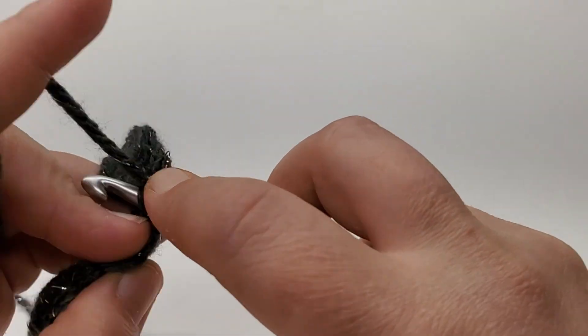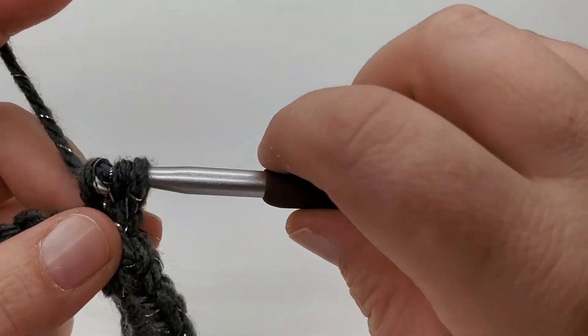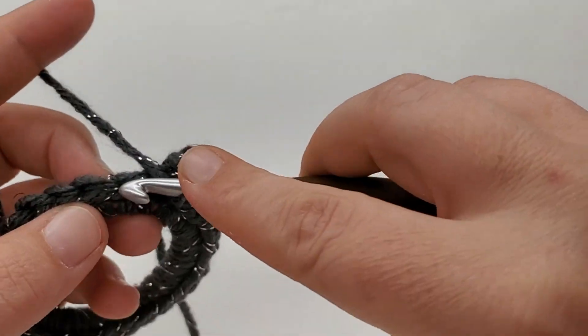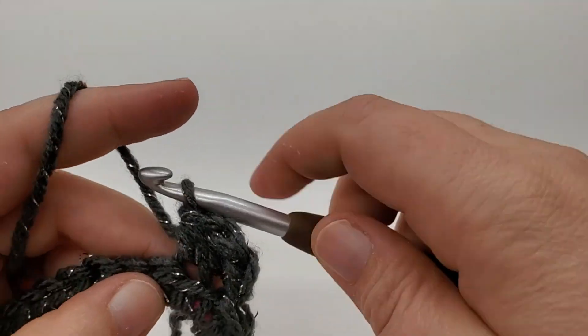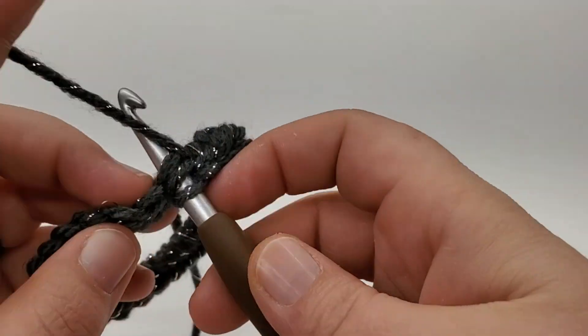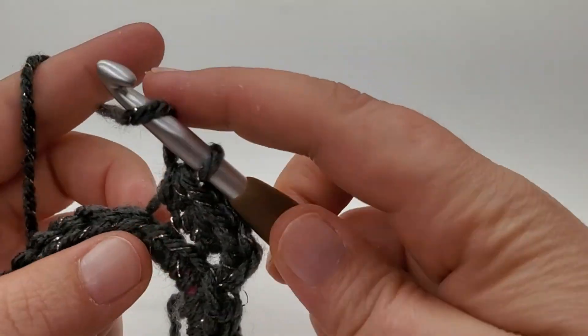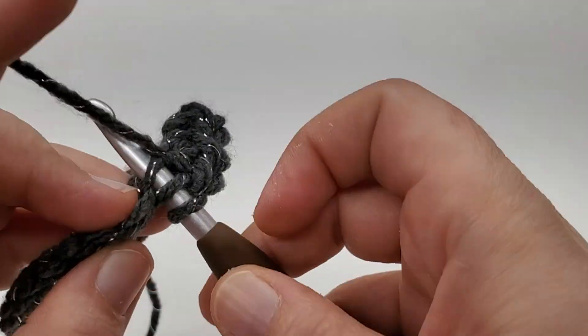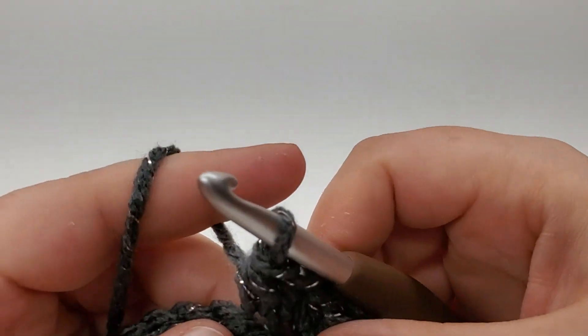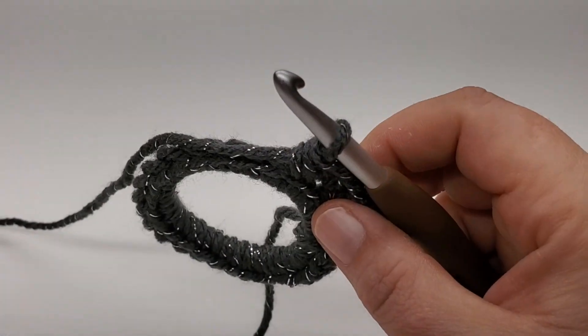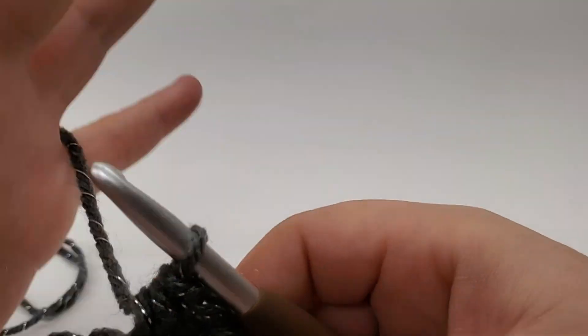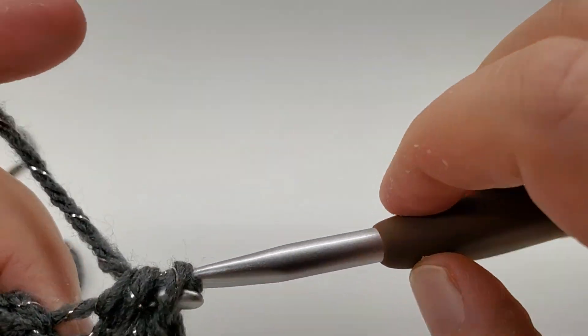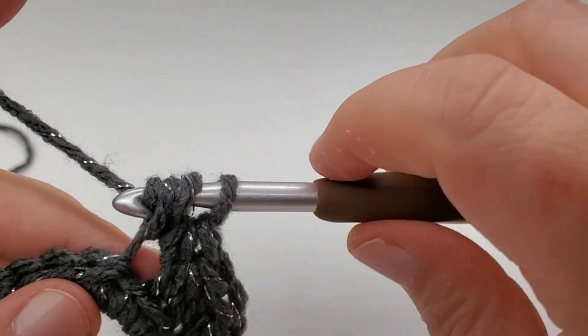So we're just going to go straight into that back loop and work two back loops. We're going to do one in the next. And two into the next. So we're increasing. One, two, one in the next.